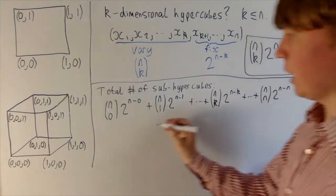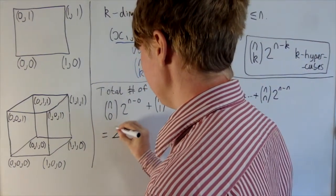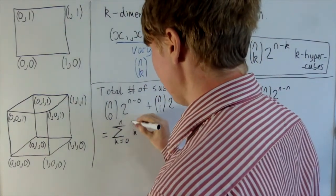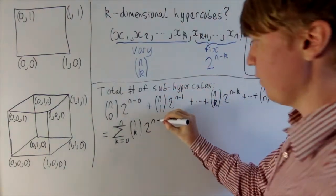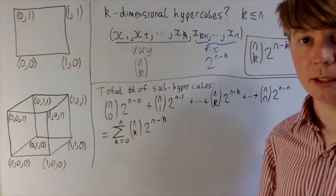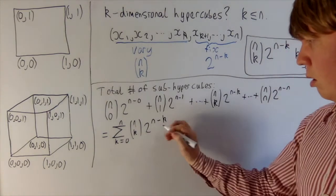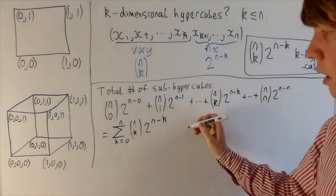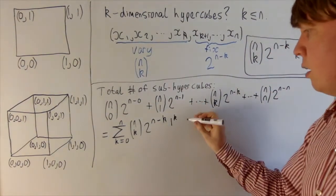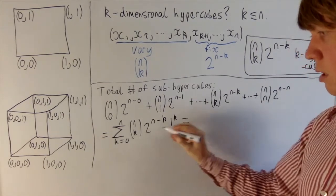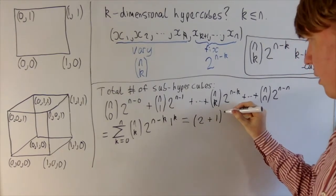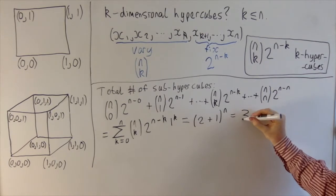We can write this more compactly using sigma notation: the sum from k = 0 to n of n choose k times 2^(n−k). This looks like a binomial expansion — we can multiply in 1^k without changing the value, making it the binomial expansion of (2 + 1)^n, which is simply 3^n.